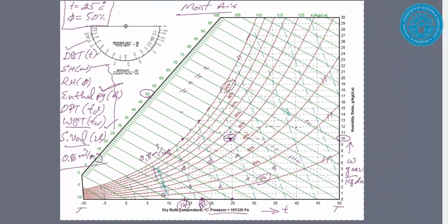So this is the state of the air. It is fully defined because we know all these seven thermodynamic properties, which we can read from the psychrometric chart. I hope it was useful. Thanks for watching.